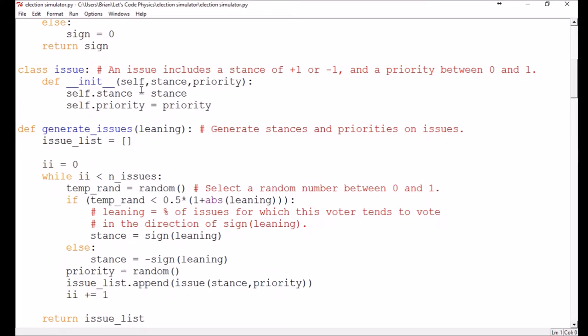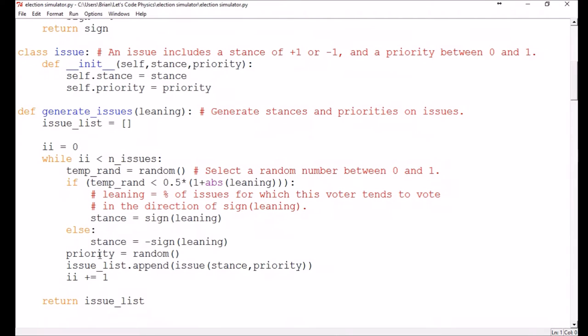First, we have a set of issues on which each voter and candidate adopts a stance and assigns a priority. Second, we have an issue generator. It selects a random stance for each voter weighted by that voter's political leaning. If a voter's political leaning is equal to positive 1, then it selects positive 1 as every stance, and if a voter's political leaning is negative 1, it selects negative 1 as every stance. If a voter's political leaning is 0, then approximately half their stances are positive 1 and half their stances are negative 1. Political leanings that fall in between those extremes produce more or less positive or negative stances respectively. This generator also randomly assigns a voter's priority to each issue as a value between 0 and 1.